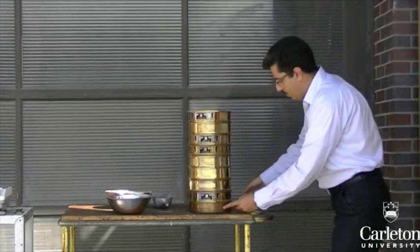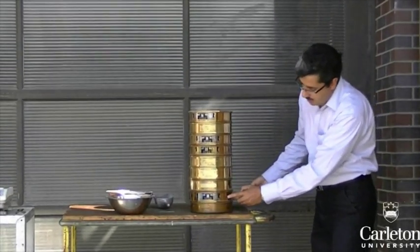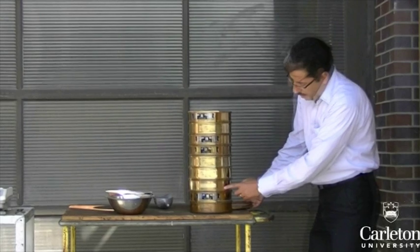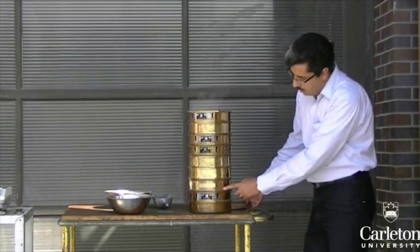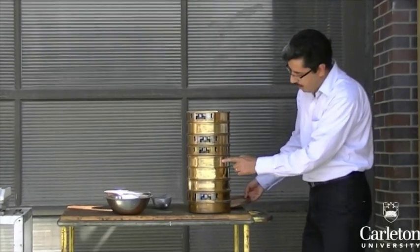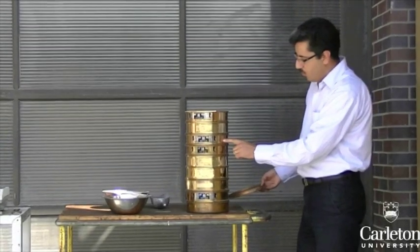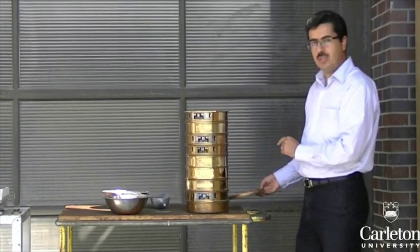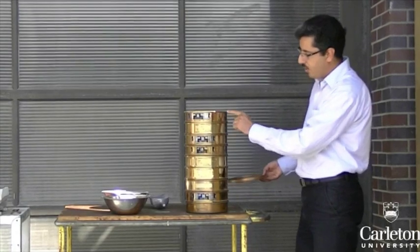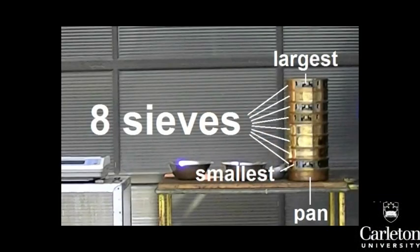In this stack, in order from bottom to top, we have sieve number 200, number 100, number 60, number 10, number 4, quarter inch, half inch, and three quarter inch. We are using 8 sieves, as that is the maximum number of sieves that a shaker can hold at one time.